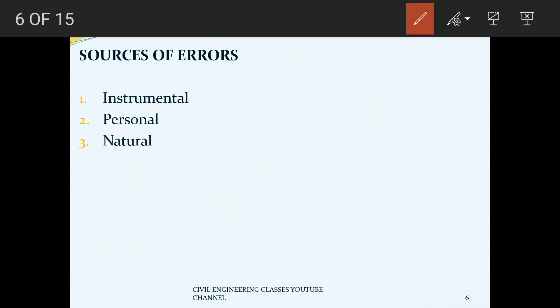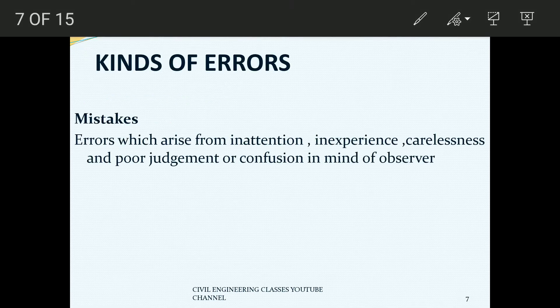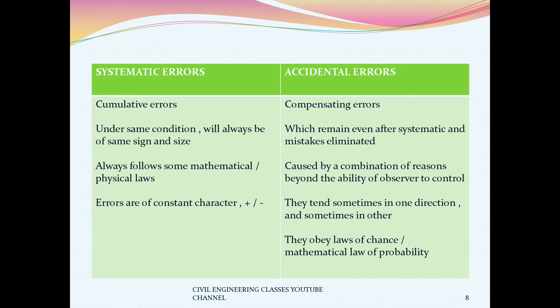Different sources of error include instrumental error, where the instrument itself is at fault — for example, the bubble center is not properly set. Next is personal error, caused by the observer making incorrect observations due to carelessness. Natural error is caused by environmental factors. Mistakes or blunders arise from inattention, inexperience, carelessness, poor judgment, or confusion in the mind of the observer.